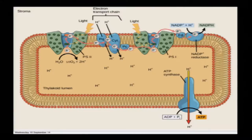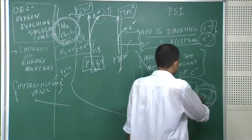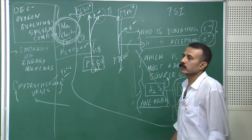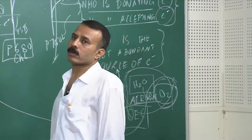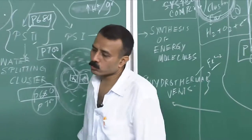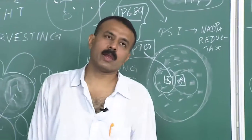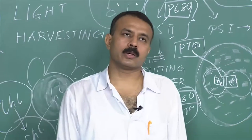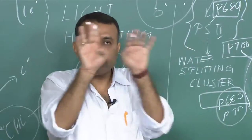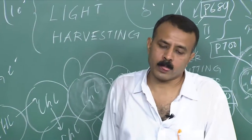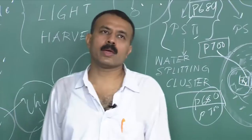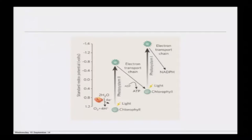Inside the thylakoid lumen, water is being split, evolving oxygen — oxygen is just a byproduct of the water-splitting process. Beyond oxygen, the reaction also generates protons: H₂O → ½O₂ + 2H⁺. So the thylakoid lumen becomes very rich in protons. There is a proton gradient across the thylakoid membrane, and it is this proton gradient that leads to ATP synthesis by ATP synthase present on the thylakoid membrane. Water is playing a critical role as the currently abundant source of free electrons, and nature has developed an amazing catalytic machinery to split water most elegantly.